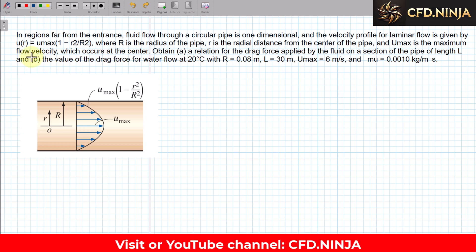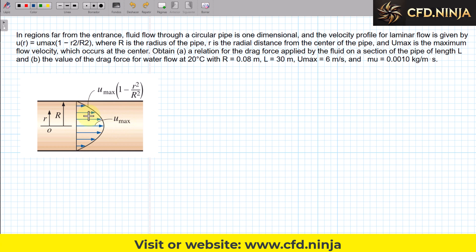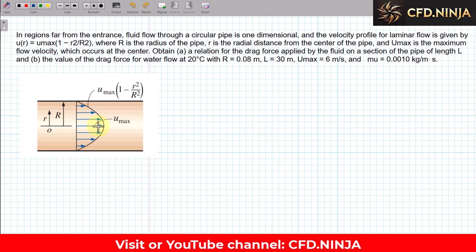And u_max is the maximum flow velocity, which occurs at the center. Here we have a velocity profile and in this velocity profile we clearly see that u_max is the maximum velocity. These arrows, which are vectors, represent the velocity of the fluid along the pipe. By theory, at the walls the velocity is zero, and the maximum velocity occurs at the center of the pipe.